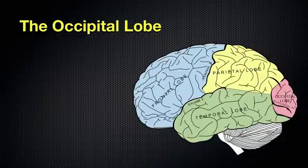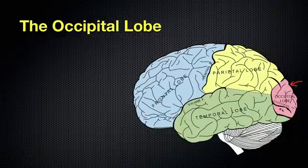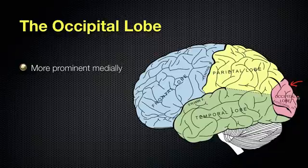The occipital lobe — you can see it here at the posterior end of the brain, shown here in pink. You're just seeing a small surface here, but I want to emphasize that it also extends medially, so it's more prominent as you go more medially into the brain. We're going to see that in the next slide.